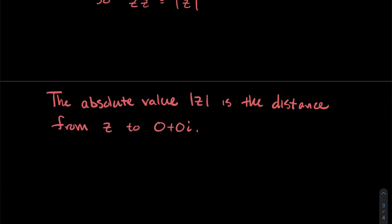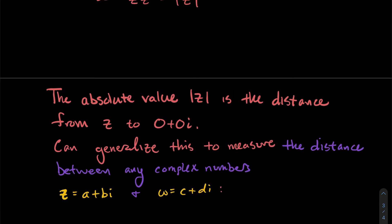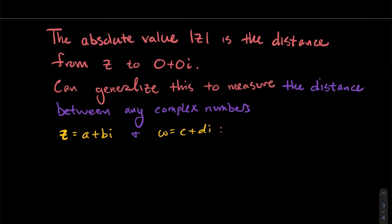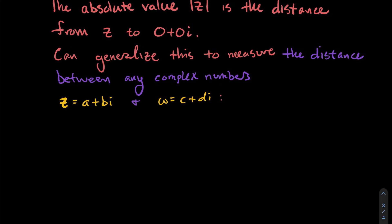The absolute value of z is the distance from z to 0 + 0i. Let's generalize: can we measure the distance from z to some other point? We define a distance function where you input two complex numbers z and w and it outputs a real number — the distance between z and w — as the absolute value of z minus w.